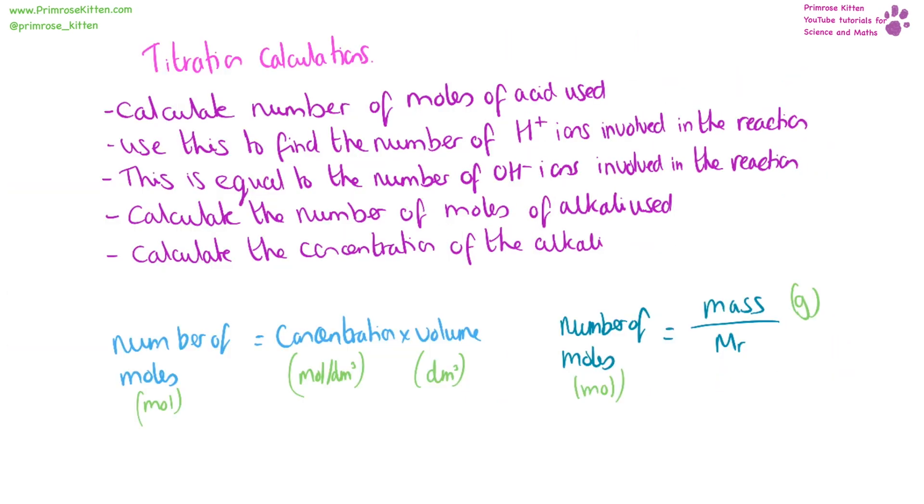If you want to work out your titration, calculate the number of moles of acid used. It's easy to find the number of hydrogen ions involved in the reaction. That's always going to be equal to the number of hydroxide ions involved at neutralization. You can calculate the moles of alkali used, and from that calculate the concentration of the alkali.